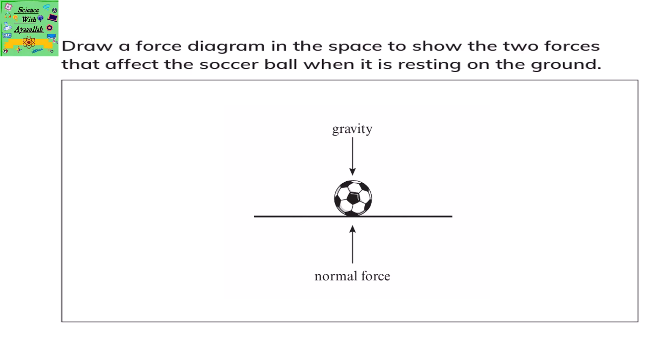Draw a force diagram in the space to show the two forces that affect the soccer ball when it is resting on the ground. The ball is being acted on by gravity and the normal force. The gravity pushes the ball downwards and the normal force pushes the ball upwards. Because of these two forces being equal, the ball does not move.